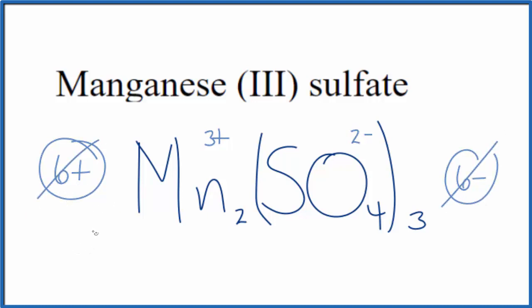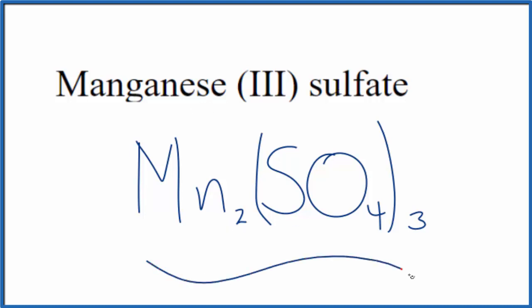So this is the formula for manganese (III) sulfate: Mn2(SO4)3. And this is Dr. B, thanks for watching.